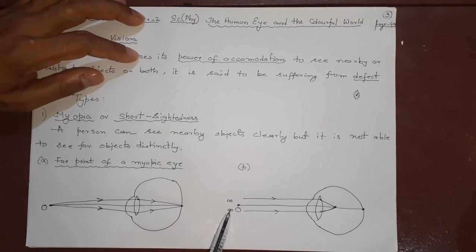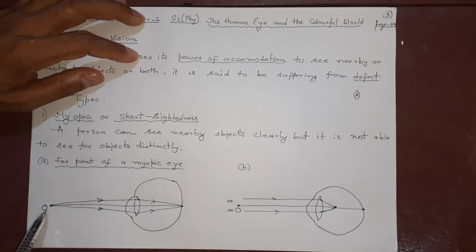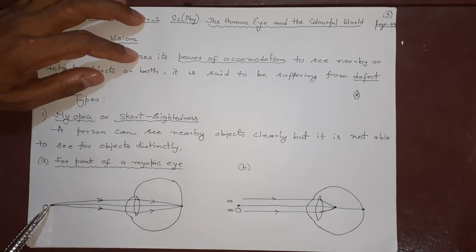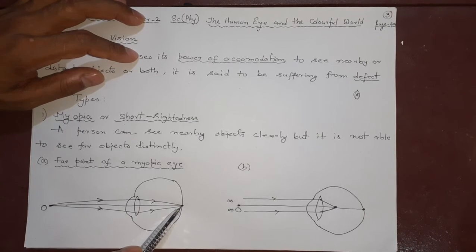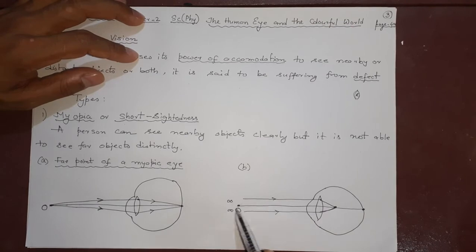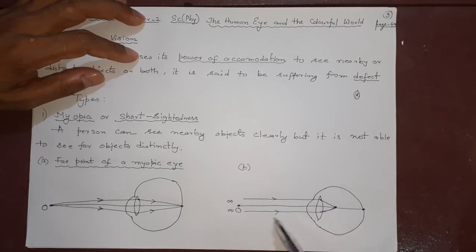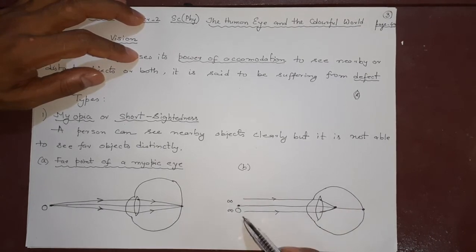Light rays coming from infinity will come parallelly, but the myopic eye can only focus objects that are not very far. The focus means the distance from the eye lens to the retina — the screen. When light is coming from very far, the eye lens is not good enough, so it is not able to make the image fall on the retina.